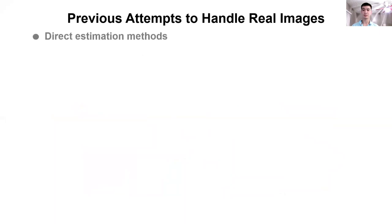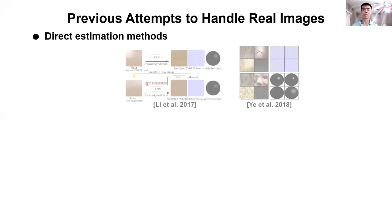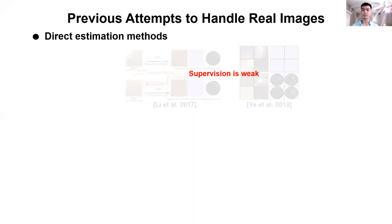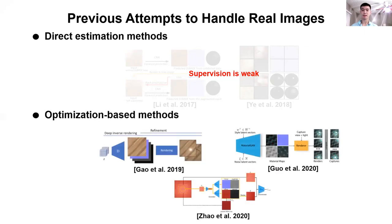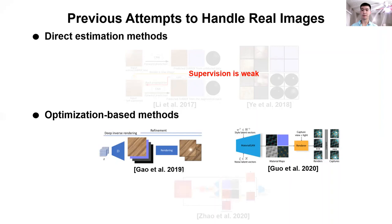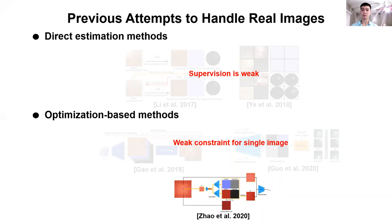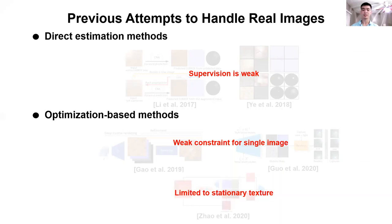There have been several previous attempts to address this data distribution gap. For example, Li and Ye proposed a self-augmentation training strategy to train their network on real images. However, this supervision is weak, and therefore their methods are not able to effectively handle real images. The optimization-based approaches perform optimization on the test example at hand and should be able to handle real images. However, Gao's approach is mainly designed for multi-input images, and for a single image their constraints are not sufficient, producing suboptimal results. Zhao's approach is designed for single image but only works for stationary texture, and highly relies on the quality of the initialized diffuse estimate.